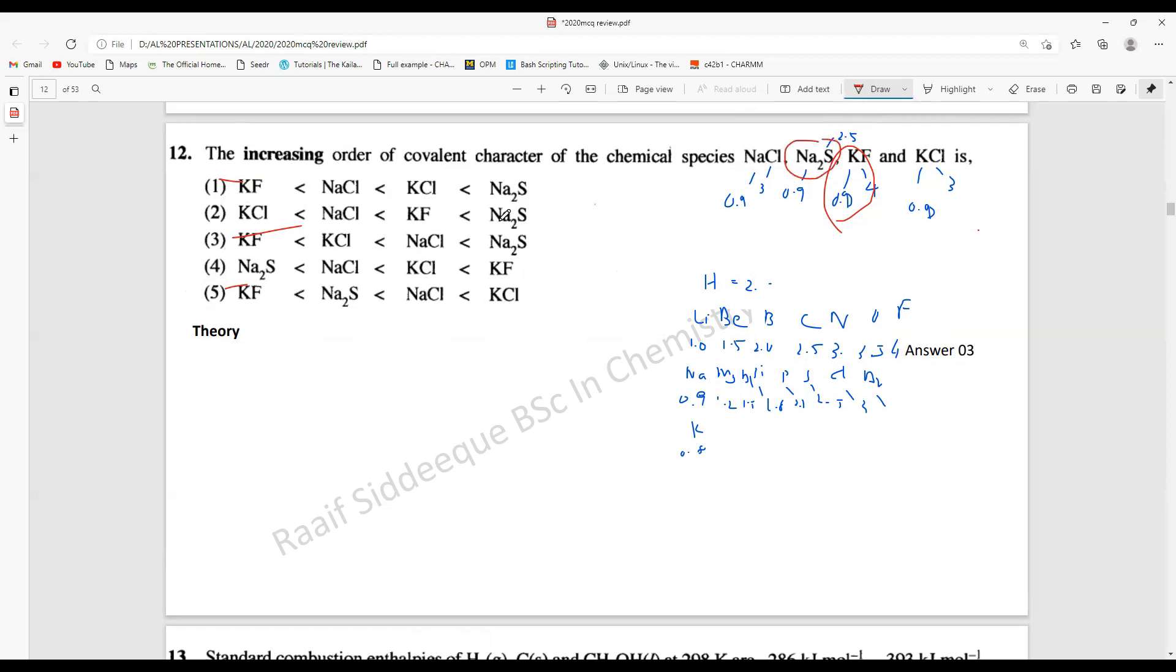Out of NaCl and KCl, KCl would have higher covalent nature because potassium is 0.8 and sodium is 0.9, so there's a difference. The answer would be the third one, because for NaCl the electronegativity difference is around 2.1, and for KCl it's around 2.2, so NaCl has a lower difference and higher covalent nature in this case.